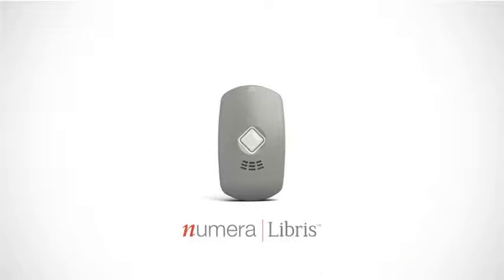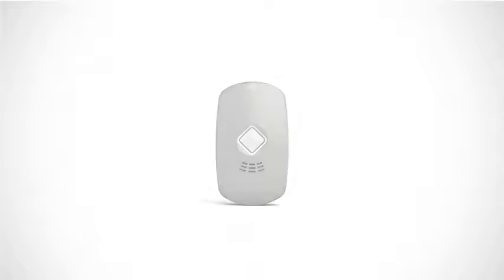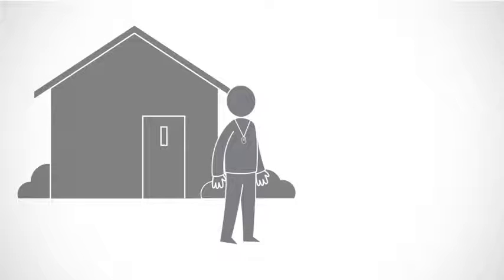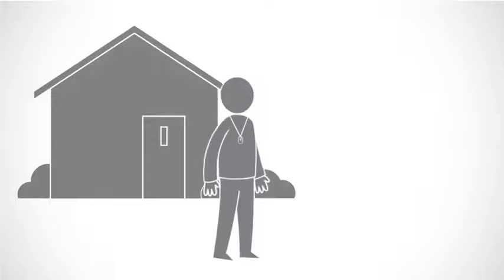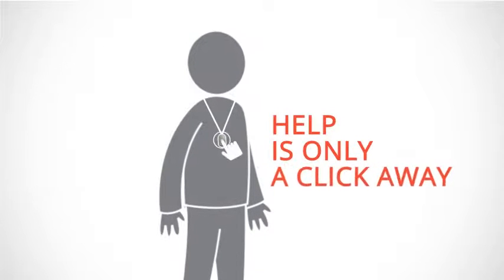Say hello to Numera Libris. Libris is a mobile PERS device designed for active older adults who want to continue to live independently, with peace of mind that comes with knowing help is only a click away.